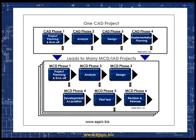The fourth phase of a curriculum architecture design project, implementation planning, prioritizes and prices out the cost for going forward in implementing the gaps of the curriculum architecture design. That then leads to many MCD and IAD efforts, which are the new product development or ADDIE-like levels of the PAC processes.